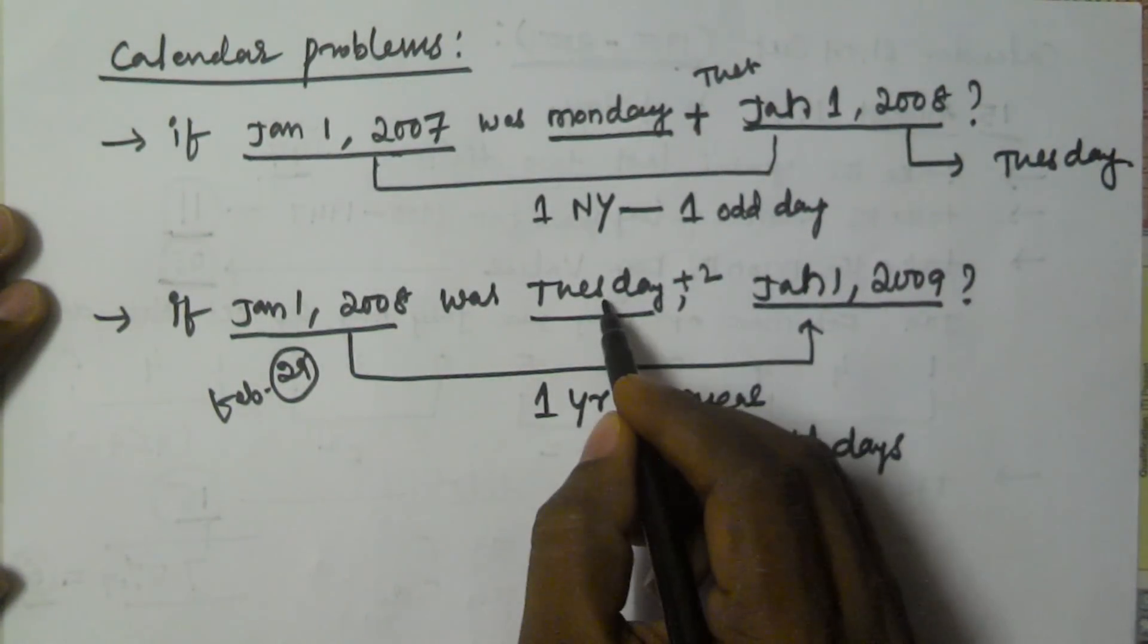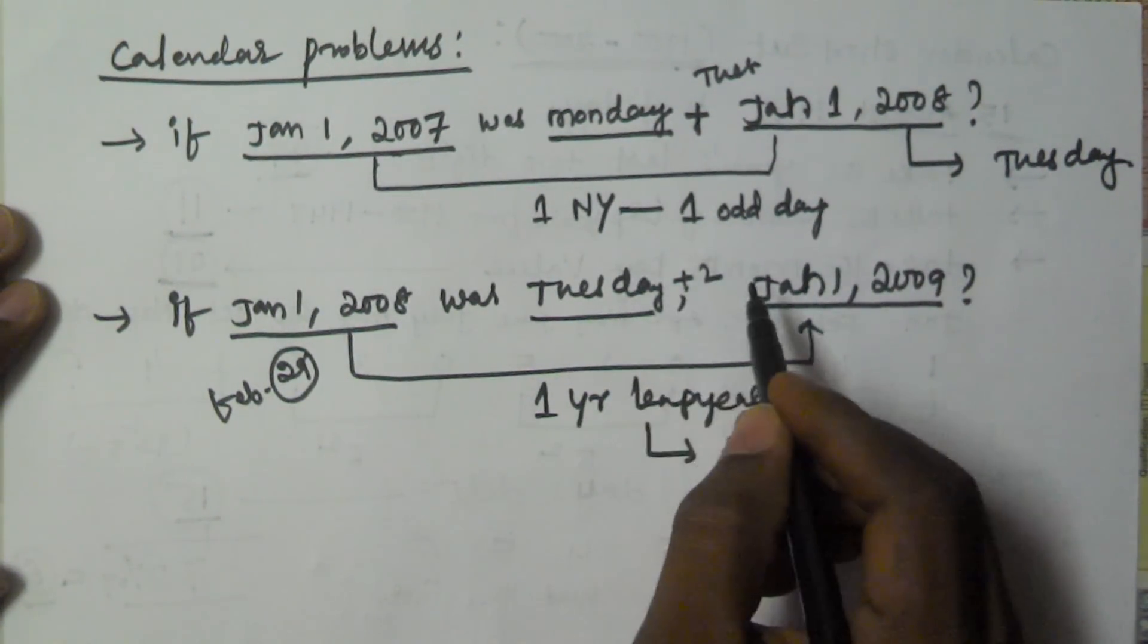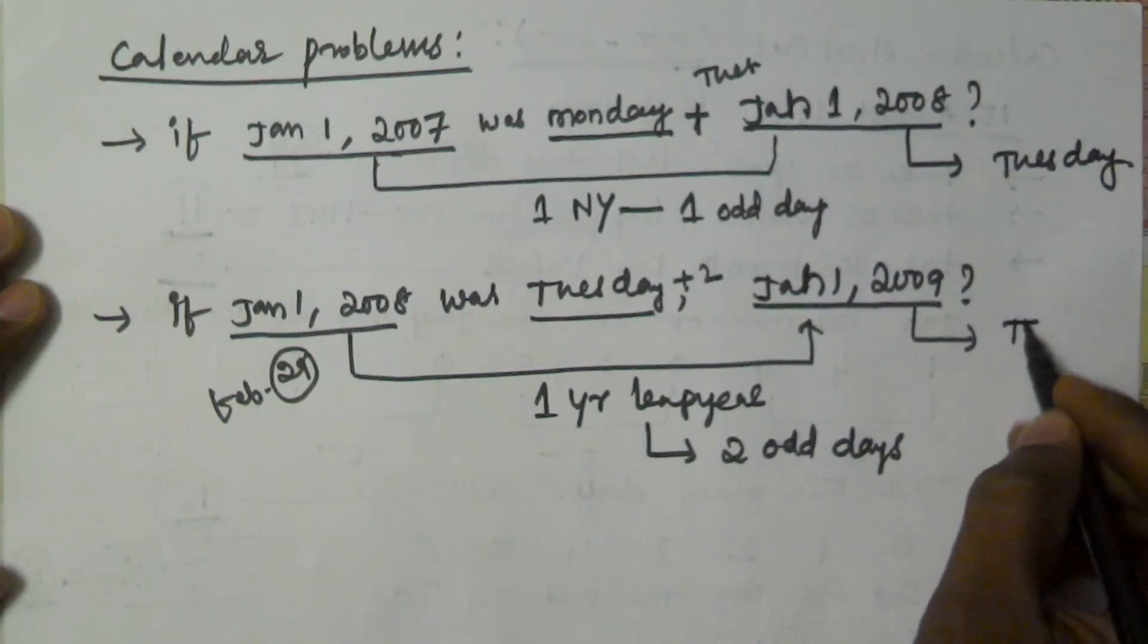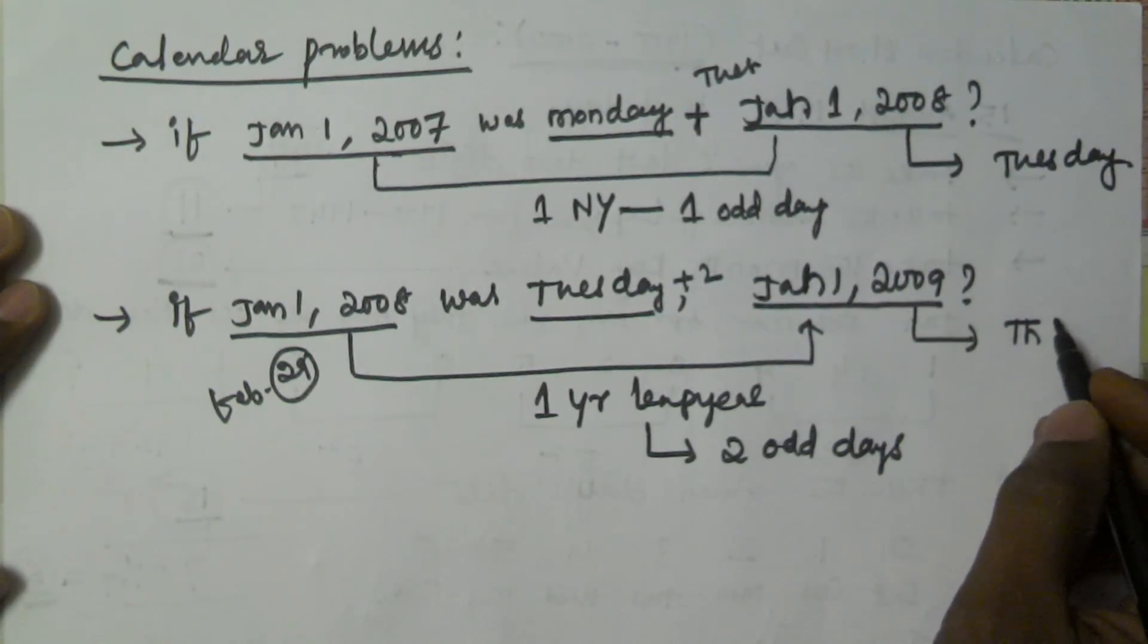So Tuesday, Wednesday, Thursday. So January 1st, 2009 is going to be Thursday.